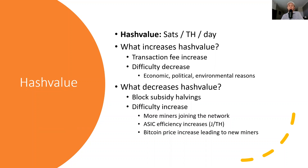Another key reason why hash value could possibly increase is a network difficulty decrease. Network difficulty decreases can happen for multiple reasons. One very common one is economic — meaning some miners are simply not profitable to be operating their machines anymore, so they may turn off their machines and difficulty may adjust downward. Another reason is political — we saw a great example of this when China banned mining back in the summer of 2021. And last, it could be an environmental reason, which could be anything from a natural disaster to the China rainy season that happens just about every year.